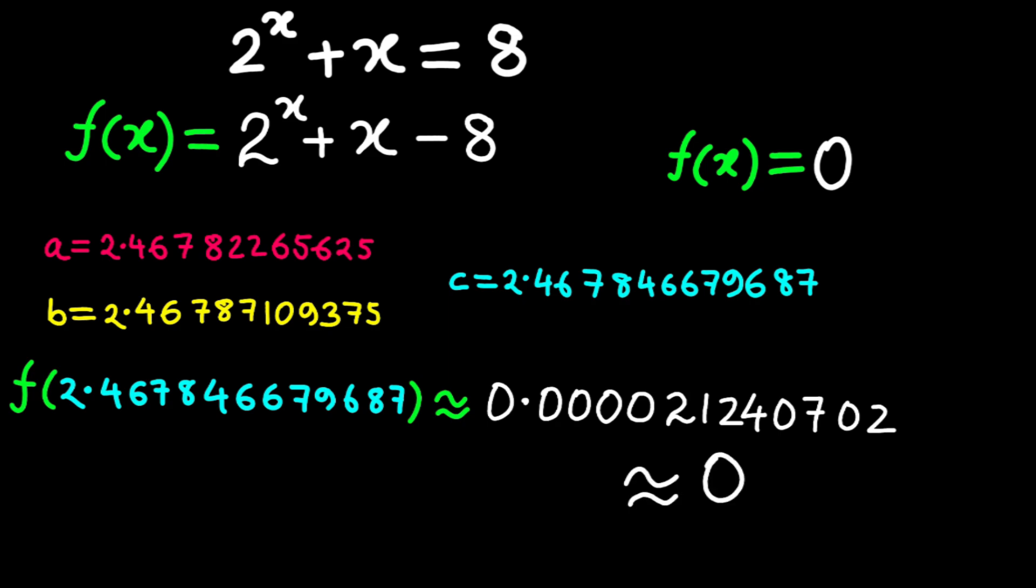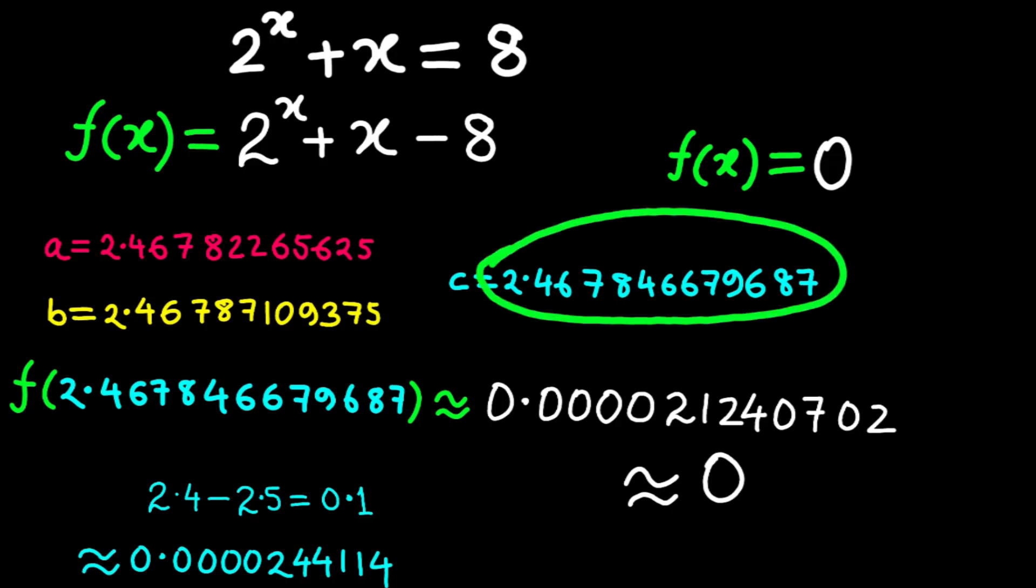How precise is this? The initial interval was 0.1 wide, 2.5 minus 2.4. After 12 bisections, the width is 0.1 divided by 2 to the power 12, which is 0.1 divided by 4096, approximately 0.0000244114. The error is at most half that, about plus or minus 0.000012207. So our midpoint, 2.467846679687, is within 0.000012 of the true root. That's like five decimal places of accuracy. Pretty solid for a method that's so straightforward.